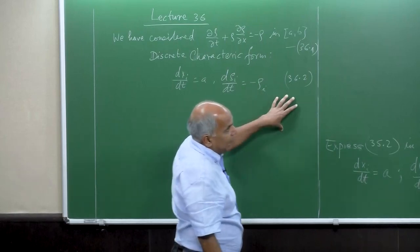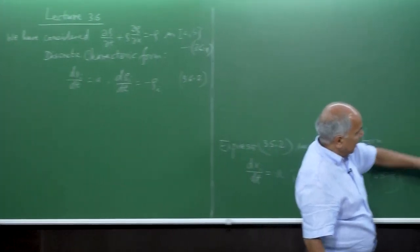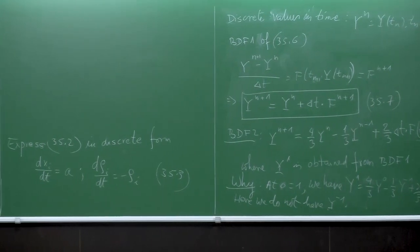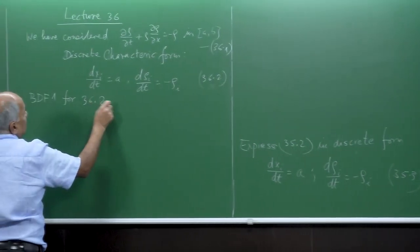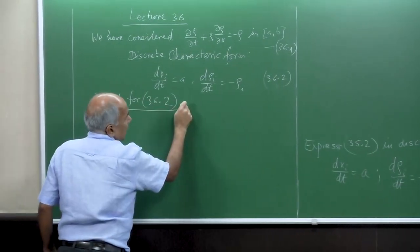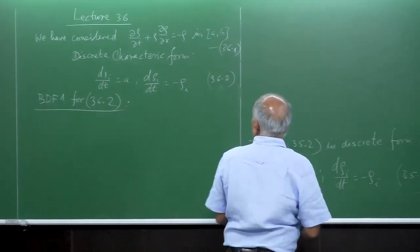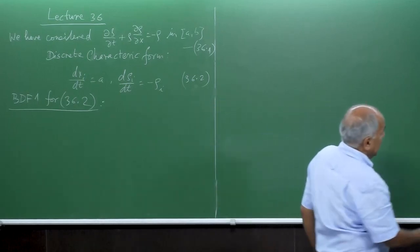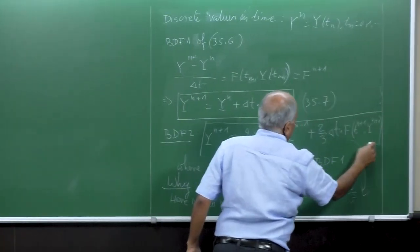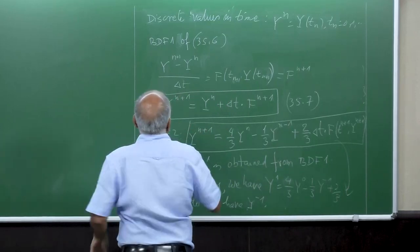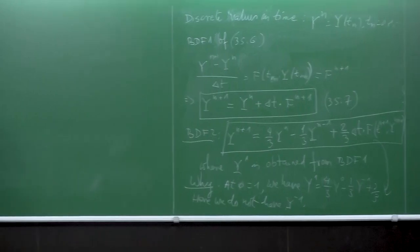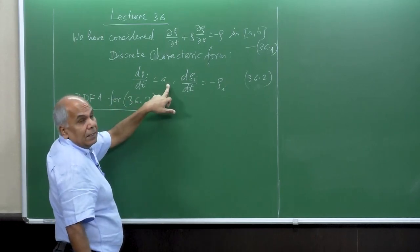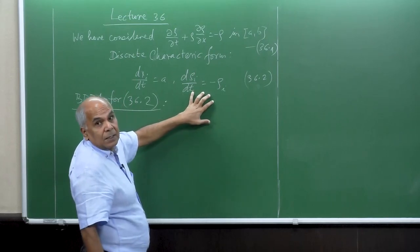Now we want to implement this into the backward difference formula. What is BDF1 for 36.2? So, BDF1 was y_{n+1}. Our y is rho, and here we do not have any value of x, so we do not solve anything implicitly. What we do is solve implicitly only this equation part.